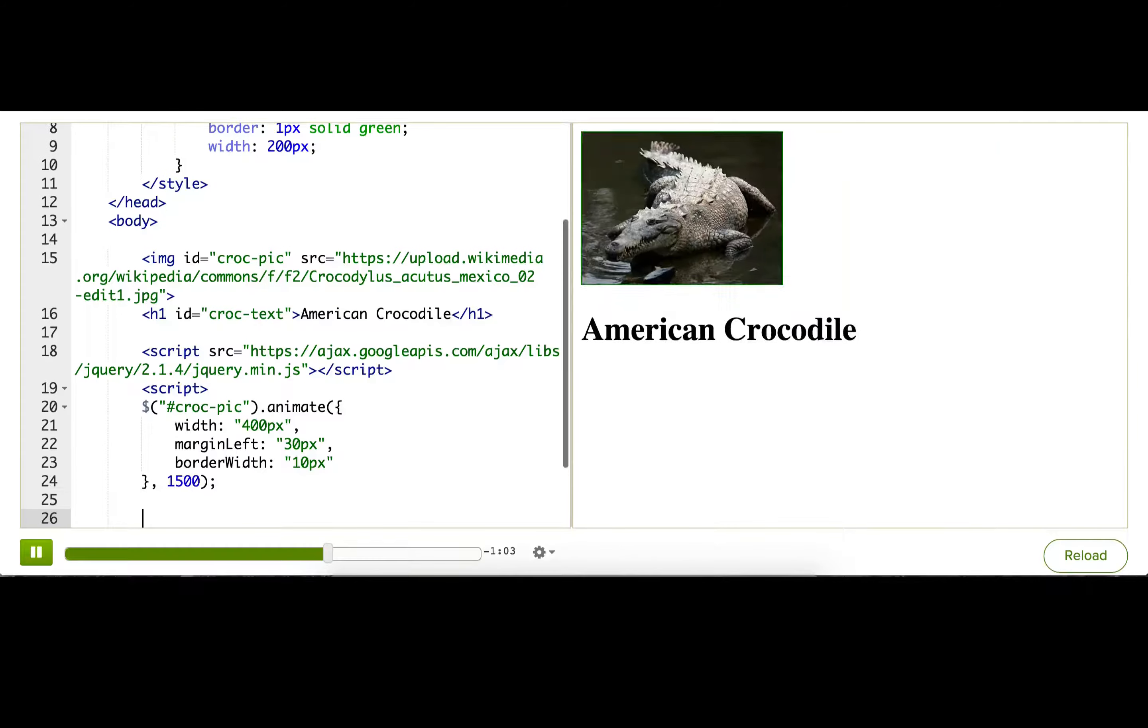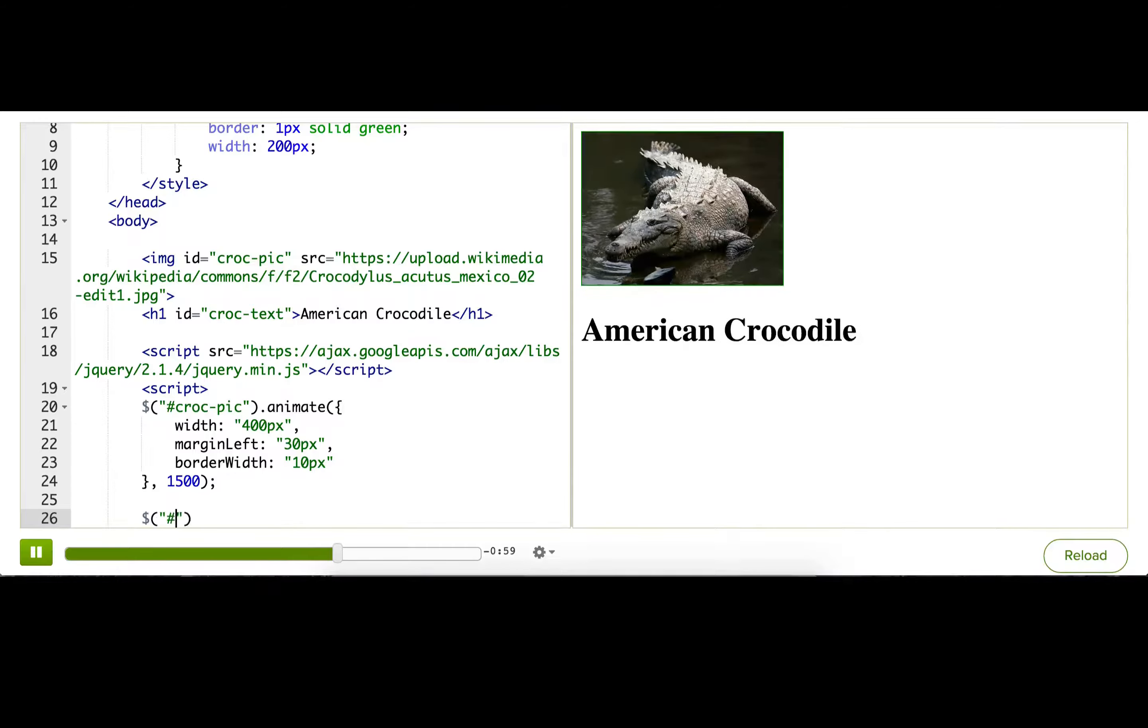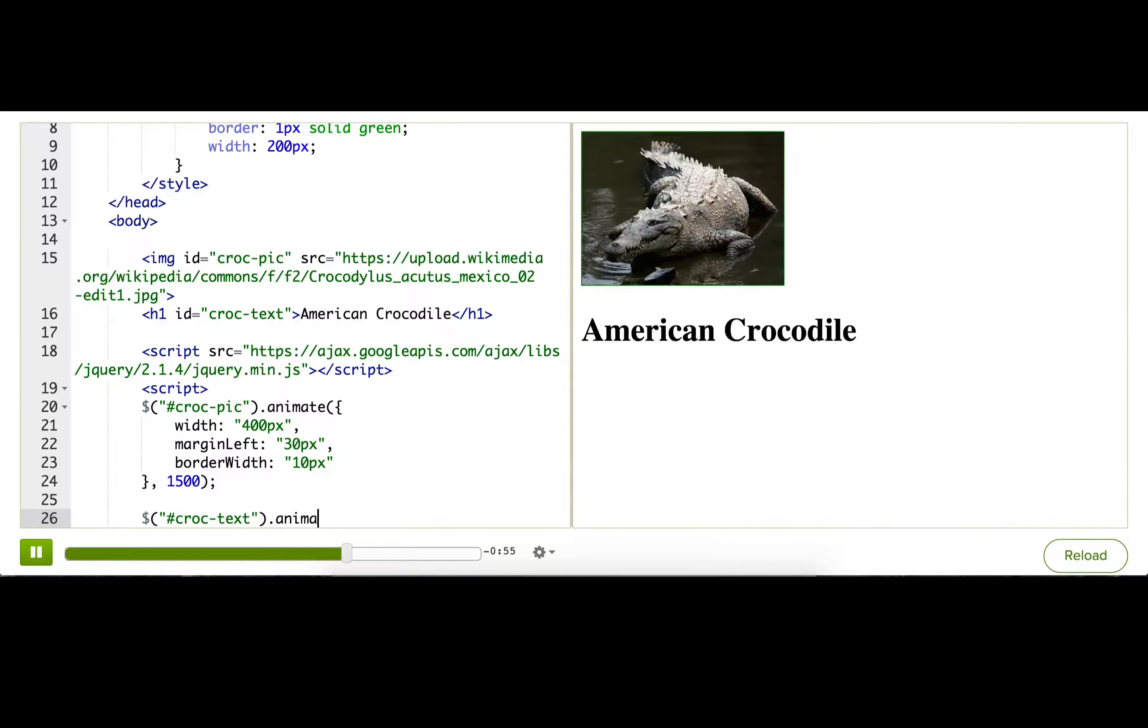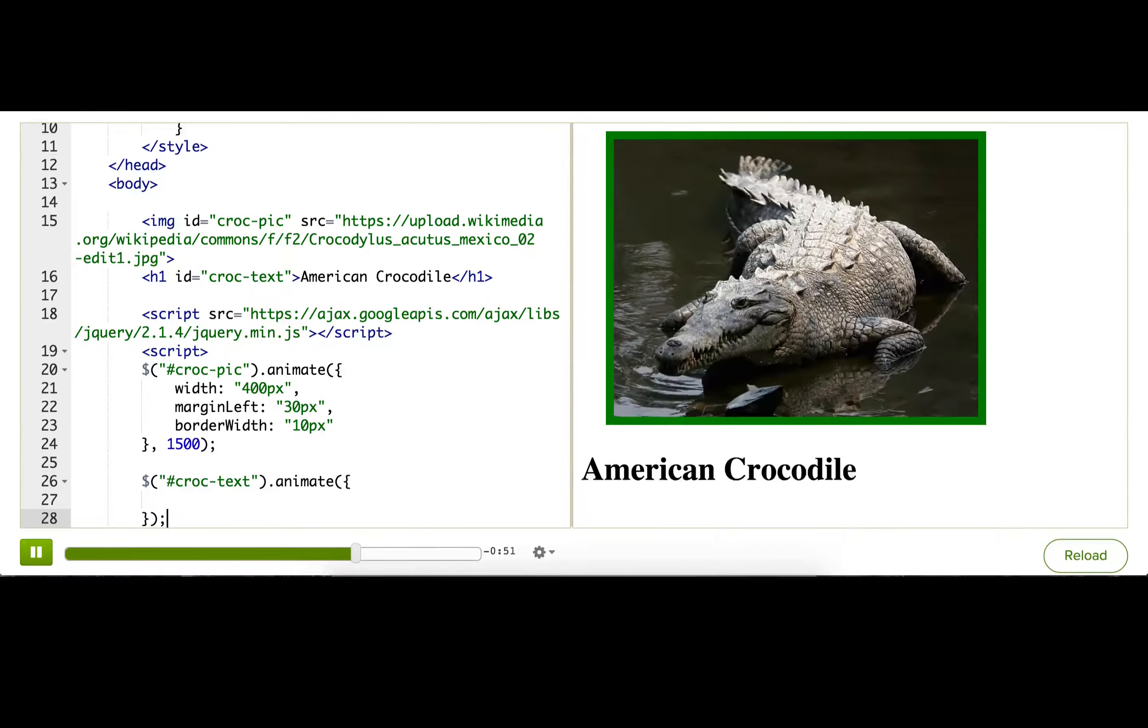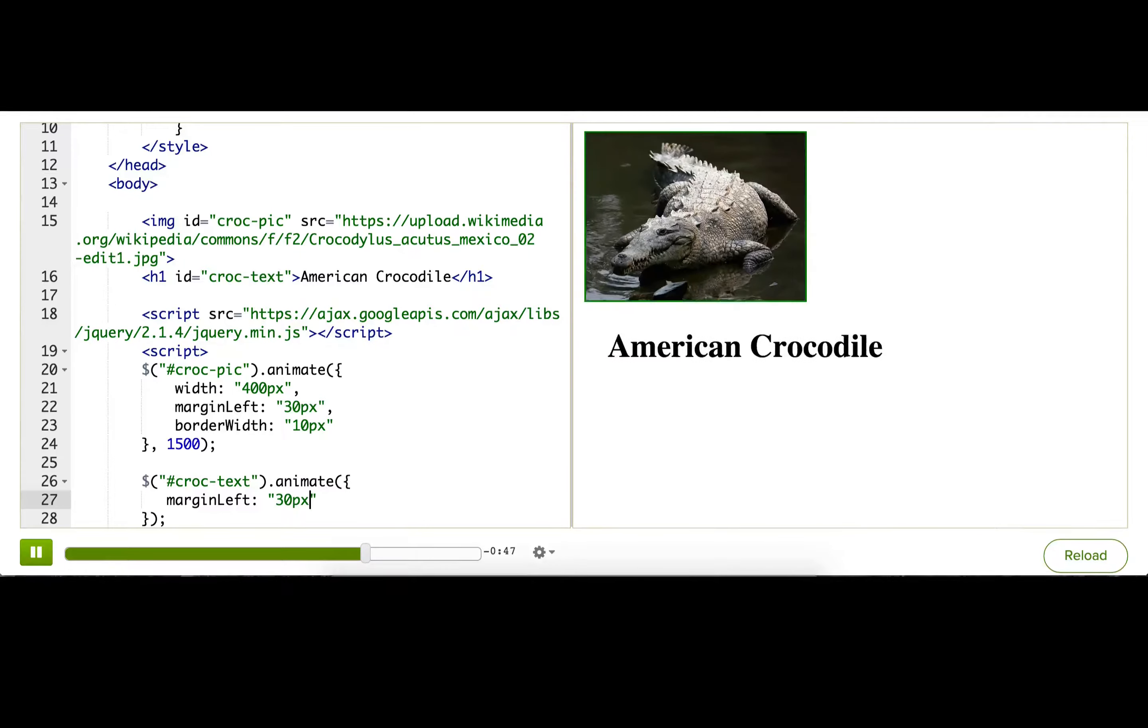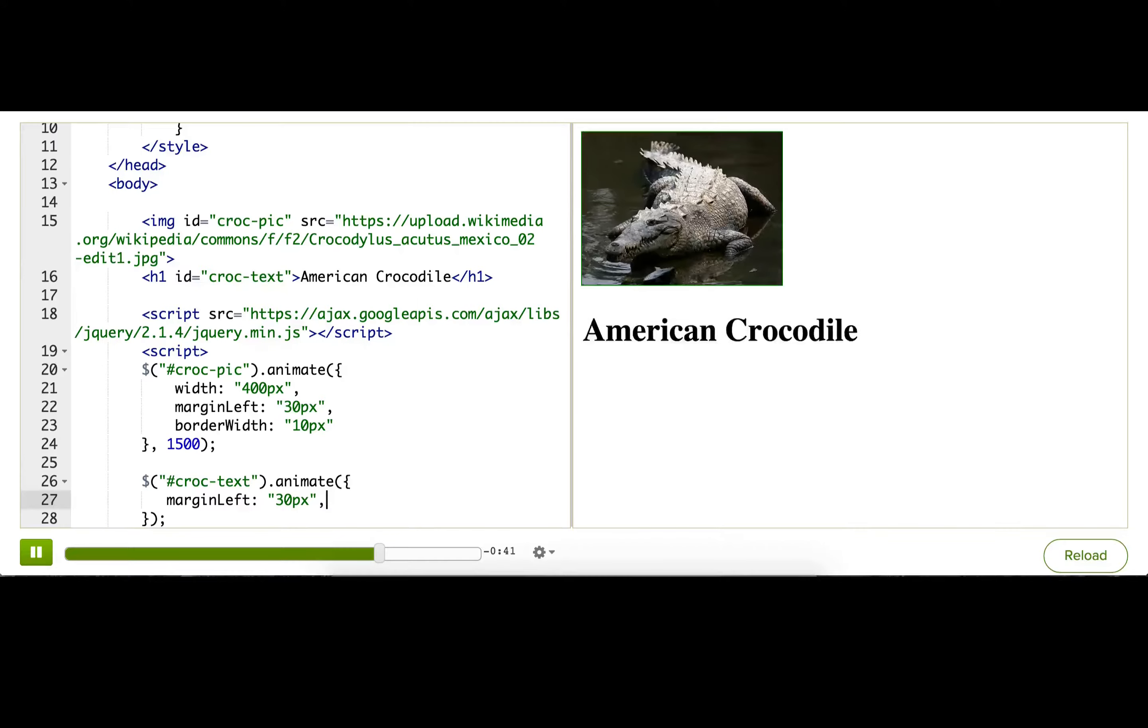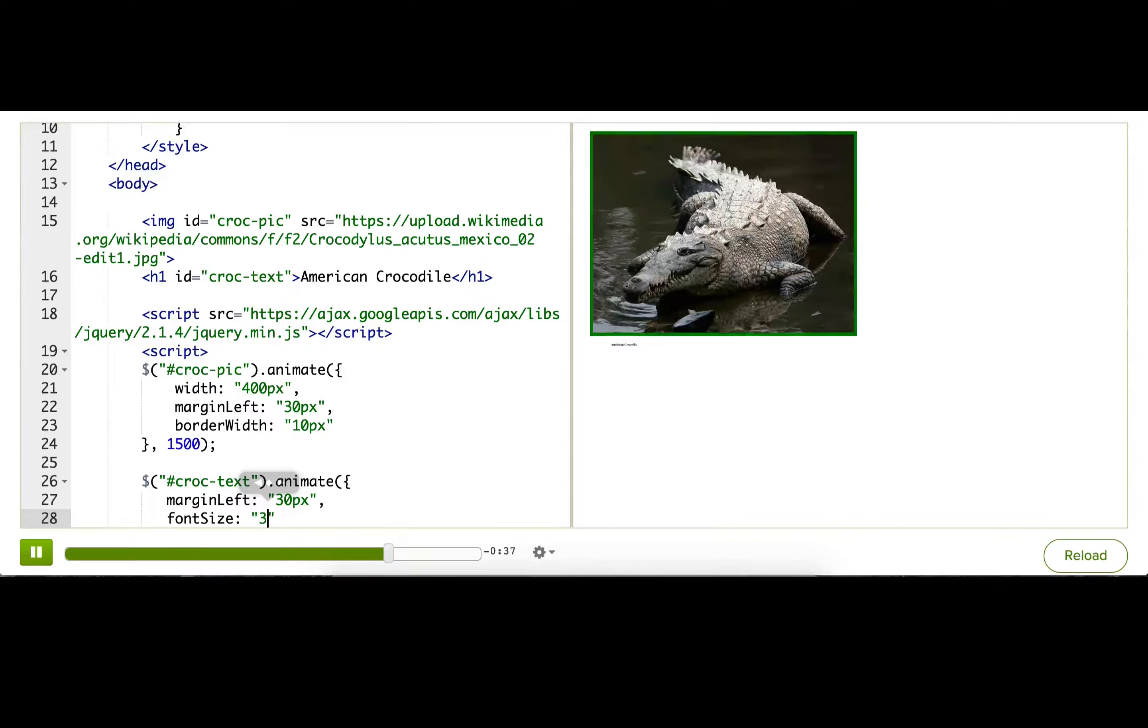How about we animate our text next? So let's find the text, and then call the animate method, and decide what we're going to pass in. Let's pass in a margin left again, so that they both end up with the same margin left. Great. And now instead of changing its width, we're going to change its font size, because that is the more appropriate thing to change.